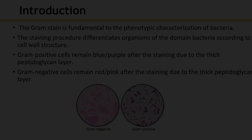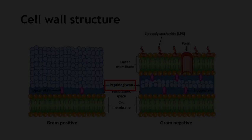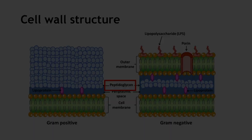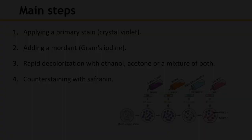The gram reaction reflects fundamental differences in biochemical and structural properties of bacteria. At the final stage of gram staining, gram positive bacteria remain blue or purple, and gram negative bacteria remain red or pink. Gram positive bacteria have a thick peptidoglycan layer in the cell wall, while gram negative bacteria have a thin peptidoglycan layer — this is why we observe the color difference after staining.